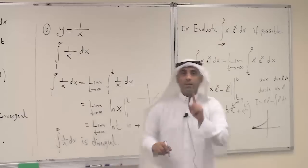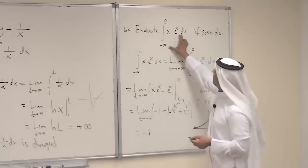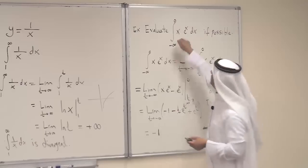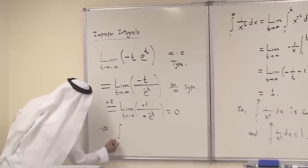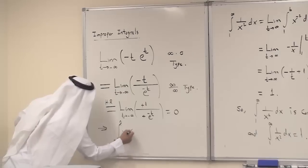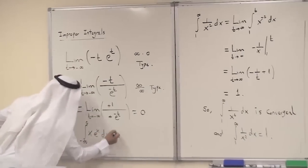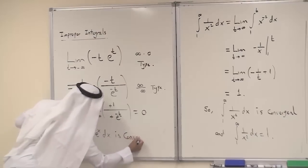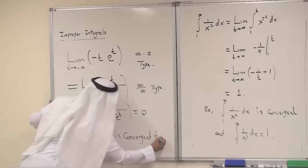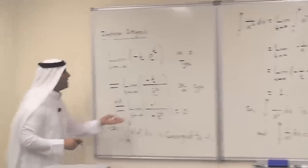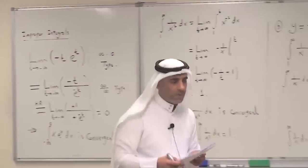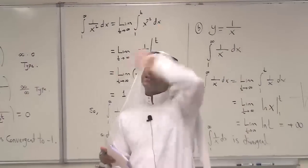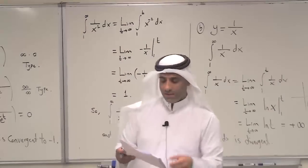Since the limit of −t·e^t is 0 and e^t also goes to 0, the final answer is −1. Since the limit exists as a finite number, the integral from minus infinity to 0 of x·e^x dx is convergent to minus 1.